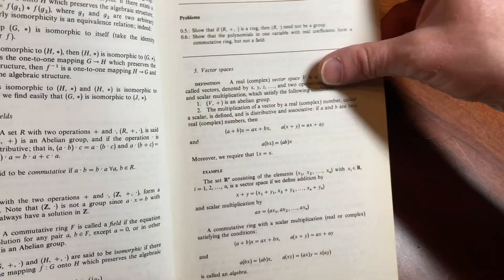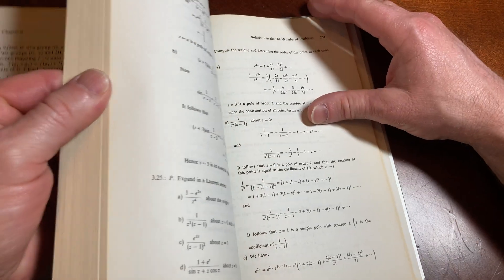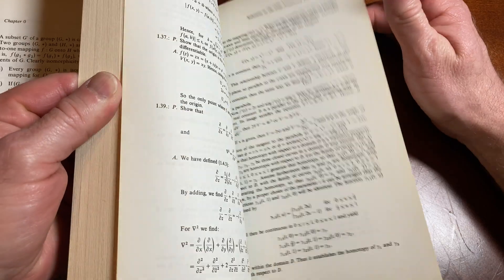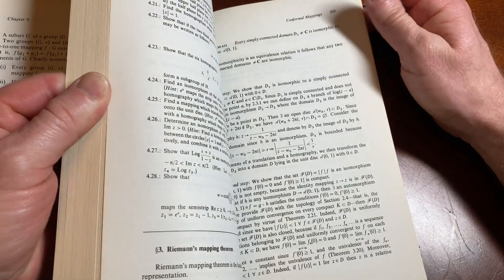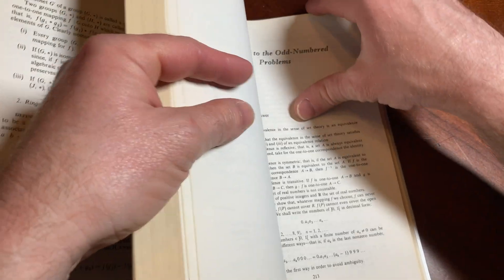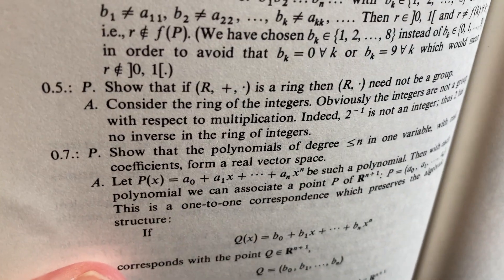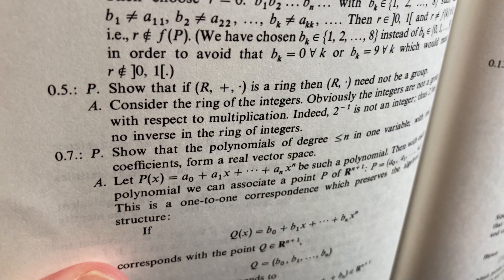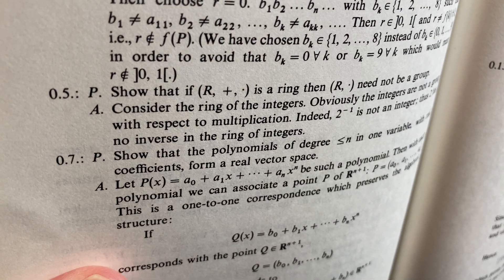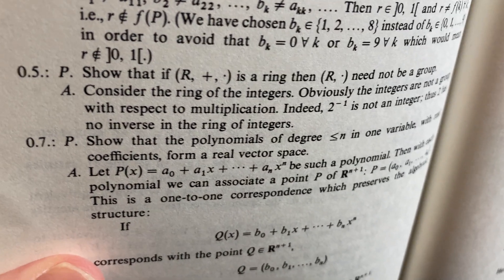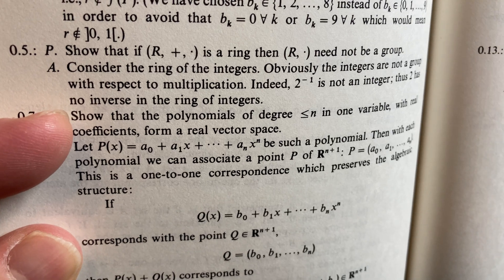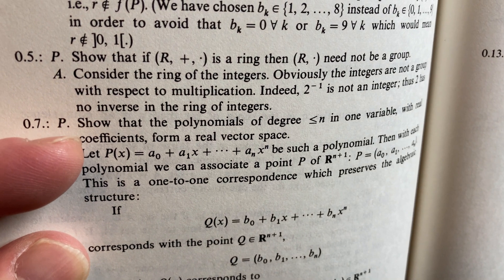At problem 0.5, let's see if we can find that in the solutions. See what it says. It says here: consider the ring of integers. Obviously the integers are not a group with respect to multiplication.